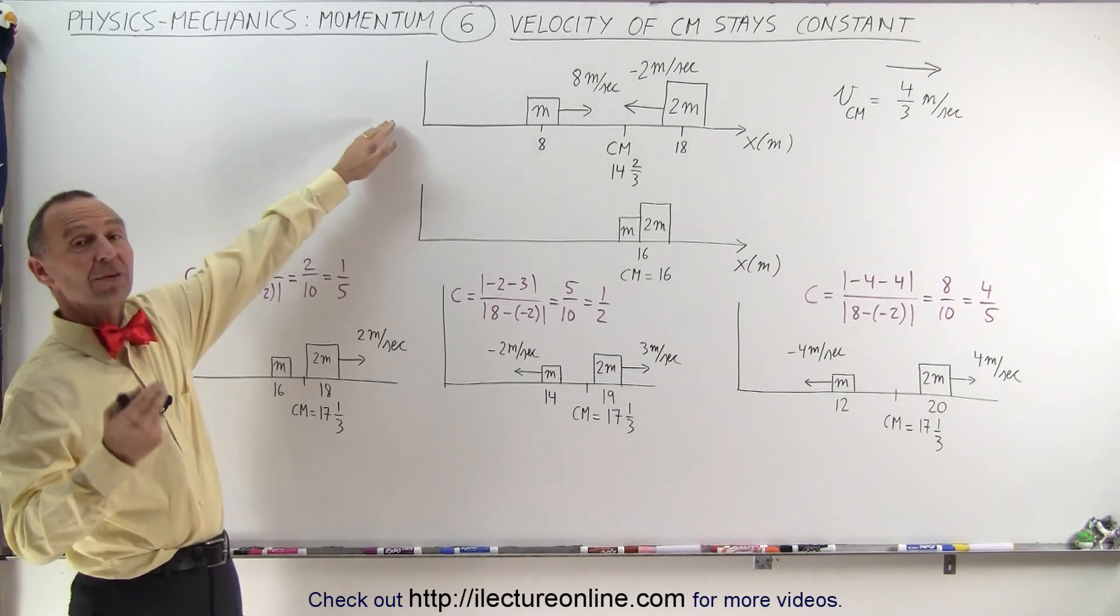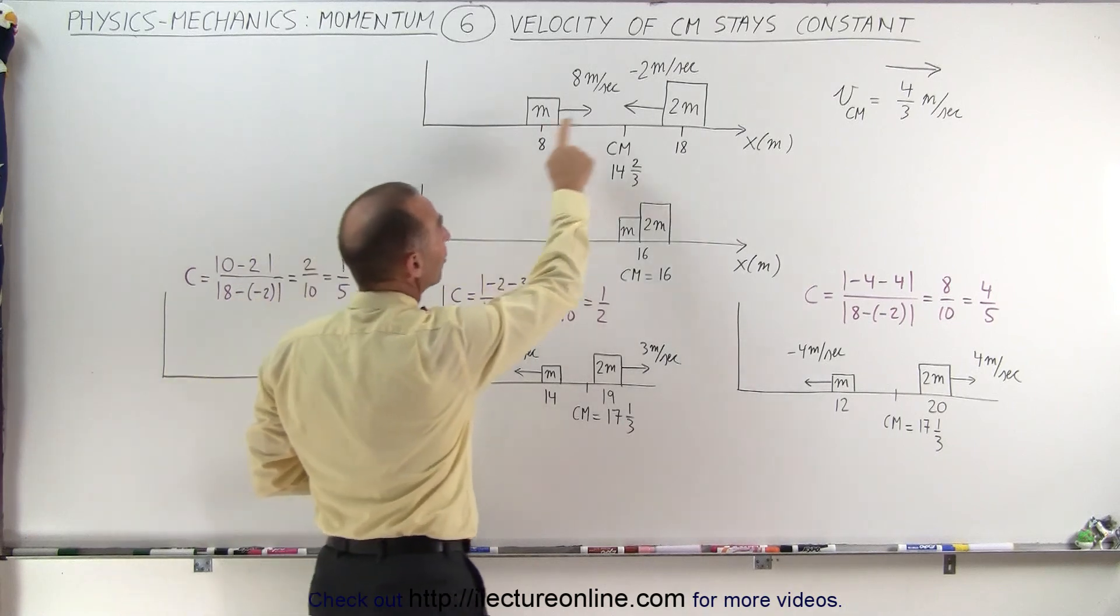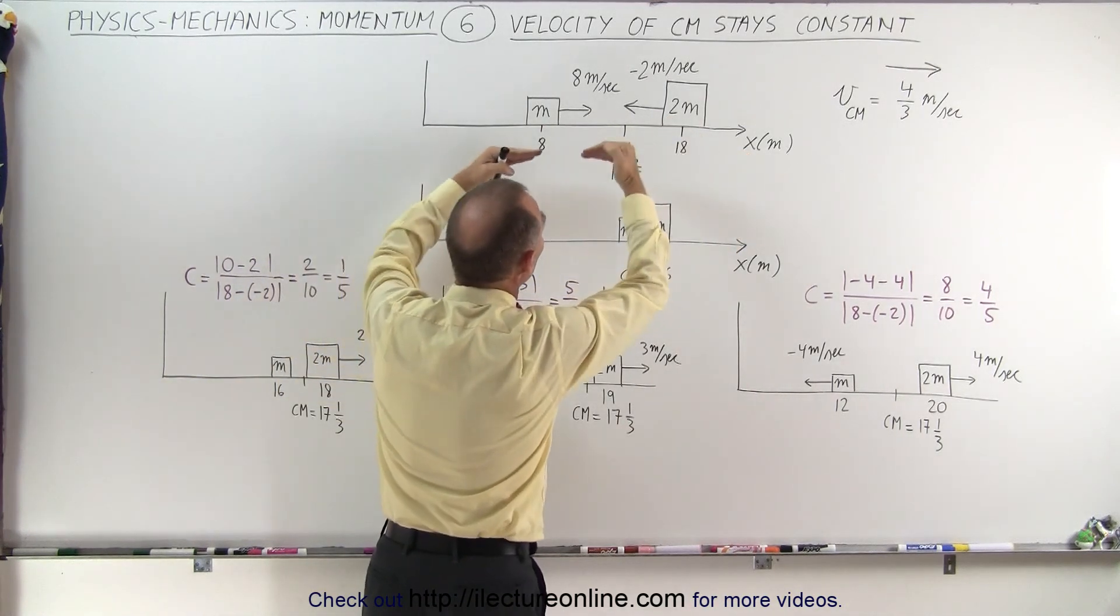Again, we start with the same situation that we had in the previous video. We have two objects, one of mass m, the other one of mass 2m, approaching one another.